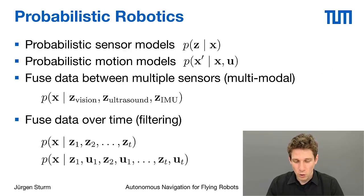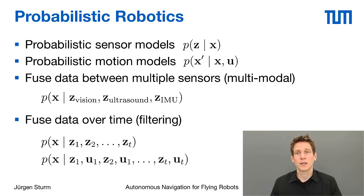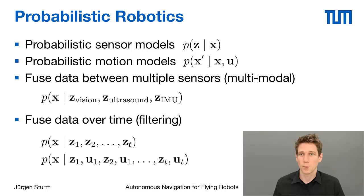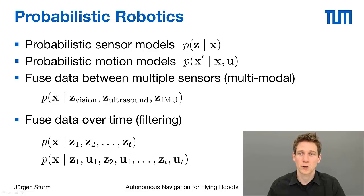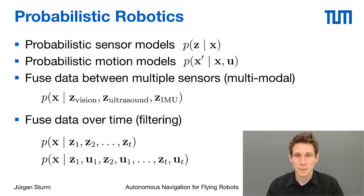All of this leads to the probabilistic robotics paradigm, where we say we cannot be absolutely sure of any of these variables, but we can specify probabilistic models to describe them. Instead of a deterministic sensor function that maps the world to one sensor reading, we introduce a probabilistic sensor model that defines a probability distribution over possible sensor readings given a particular world state. Similarly, we define a probabilistic motion model that specifies a probability distribution over possible outcomes when we are in a certain state and give a certain motion command.